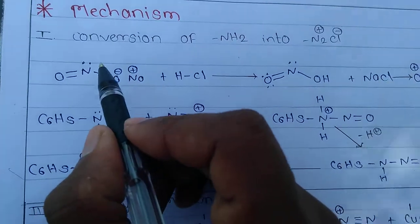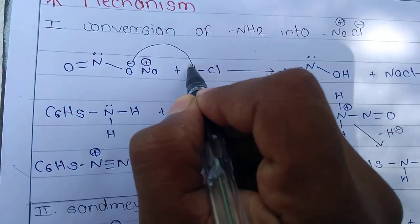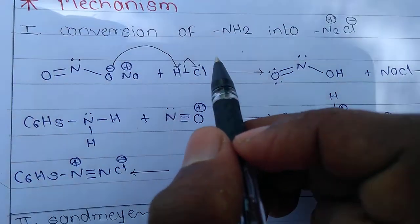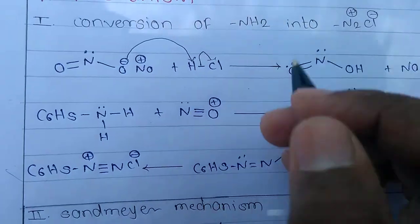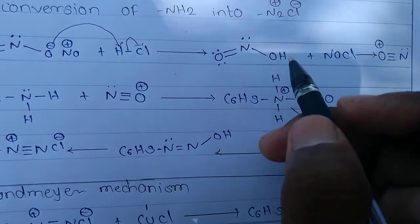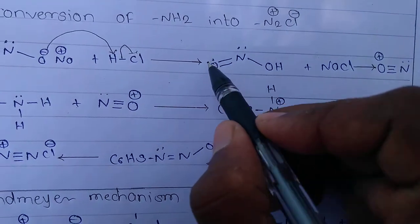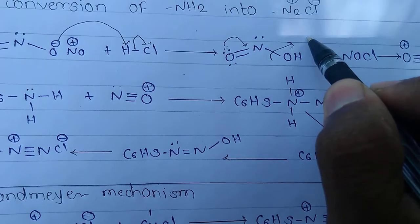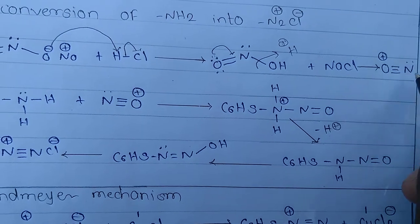This is a straightforward mechanism. The O minus takes H+ from the acid. We use NaNO2 plus HCl. The lone pair of oxygen attacks and the OH is removed — it is taken up by H+ from the acid — forming the nitrosonium ion NO+.